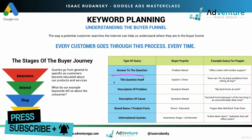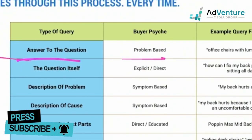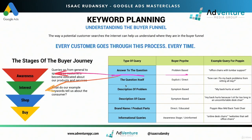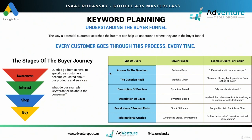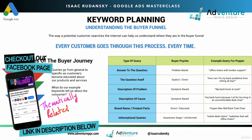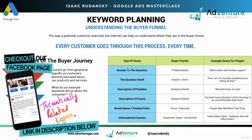The type of query or the buyer's psyche doesn't necessarily relate to any one specific buyer's funnel stage every single time. It's not as if a question-type query is always going to match up with the shop stage, or informational queries will always match up with the awareness stage. You have to assess everything on a query-by-query basis to understand where they fall in the stage of the buyer's funnel. One reason is that we're looking to create thematically related keyword groups.